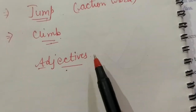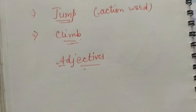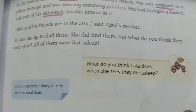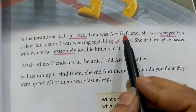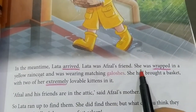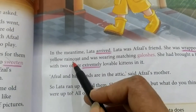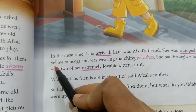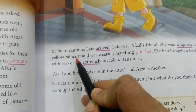Now let us understand what are adjectives. Adjectives are words which tell us more about a noun or pronoun. Like in your book on page number 121, you can see: 'Lata arrived at Afzal's house. She was wrapped in a yellow raincoat.' She wore a raincoat, but the raincoat had a color — yellow. Yellow is an adjective which is telling us more about the raincoat.